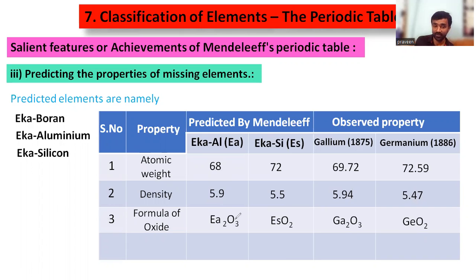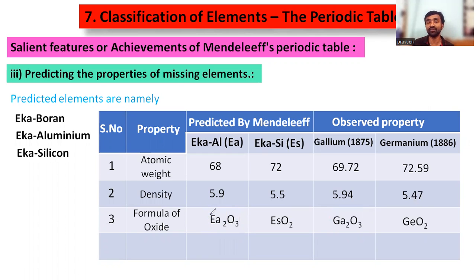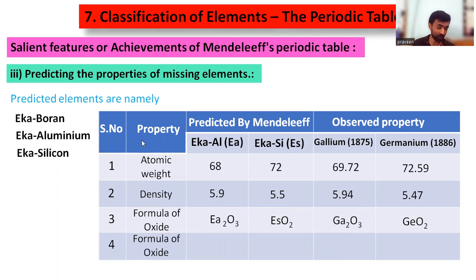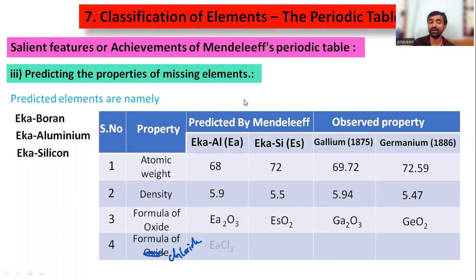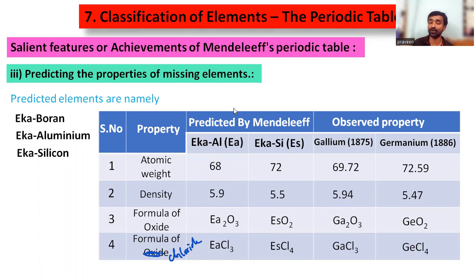The formula for chloride was also predicted: EaCl₃ for Eka-aluminium and EaCl₄ for Eka-silicon. Practically, gallium trichloride (GaCl₃) and germanium tetrachloride (GeCl₄) were observed, confirming his predictions.